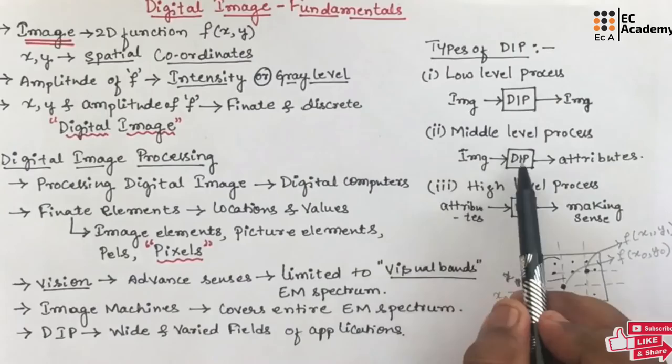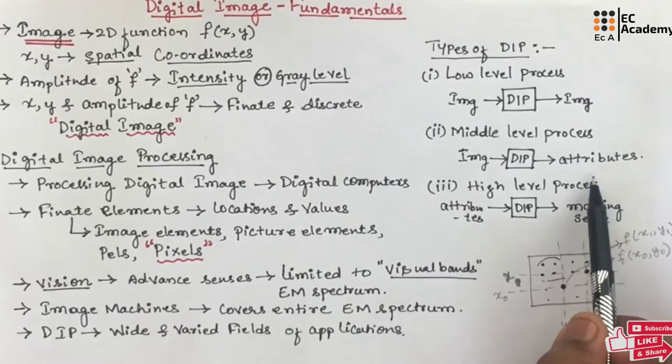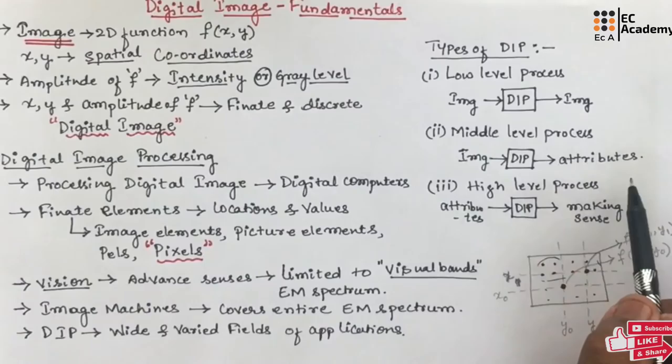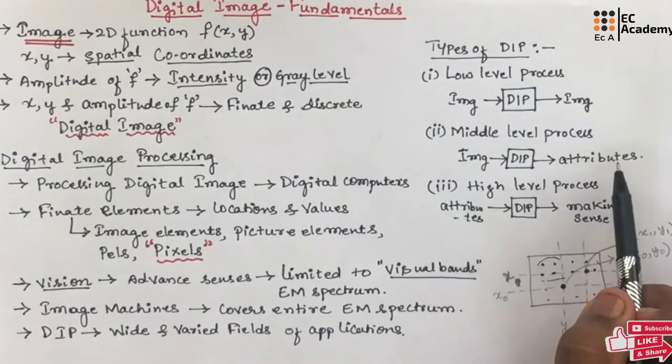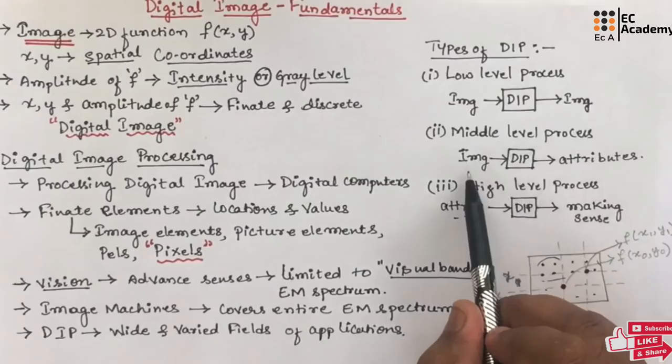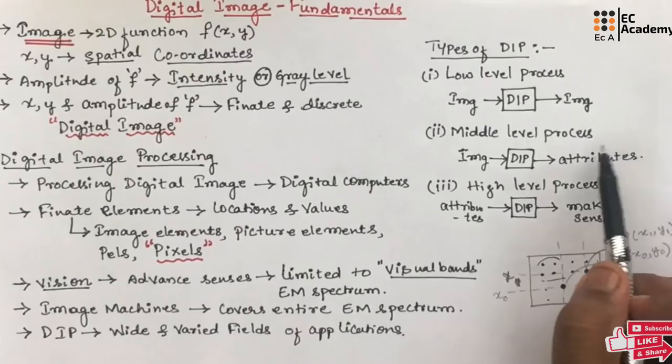In middle level processing, the input to the system will be an image and the output will be the attributes extracted from the images. For example, if we want to segment an image or extract values of an image, we use middle level processing, where the input is an image and the output will be the attributes or values of the image.